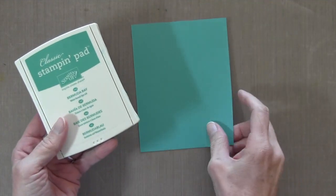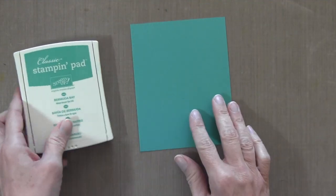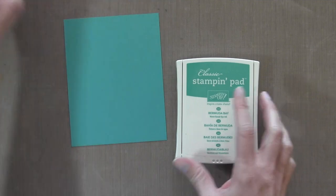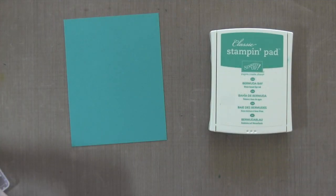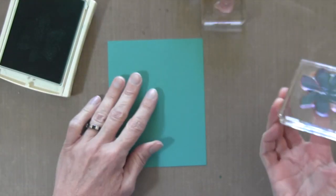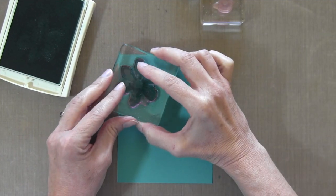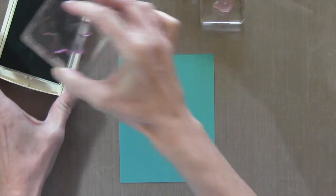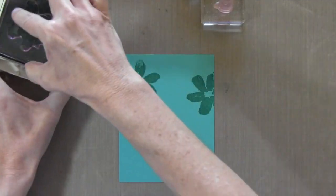I'm gonna start with my card stock. I've got Bermuda Bay, four and a quarter by five and a half, and Bermuda Bay ink, which I love about Stampin' Up, is that you can coordinate your inks and your card stock. There are plenty of other brands that also do this. Simon Says Stamp is one of them. So if you could just get an ink that matches the card stock, you'll be all set.